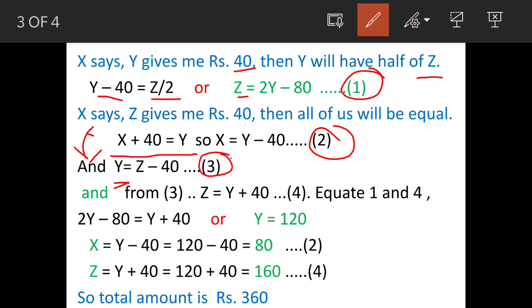From equation 3, we can derive that Z = Y + 40, because if you take 40 to left hand side you get Z = Y + 40. This becomes our equation 4.